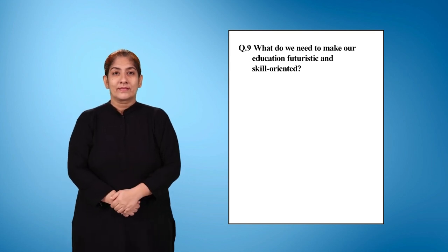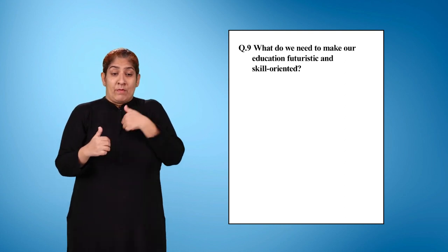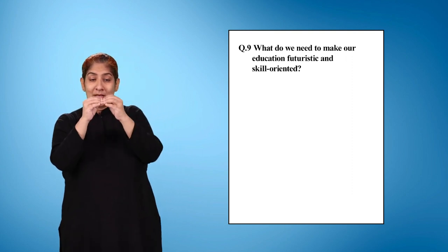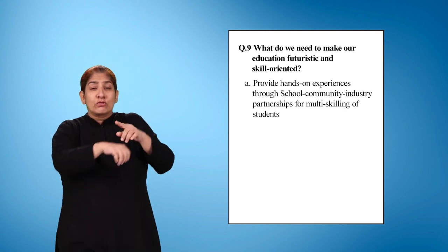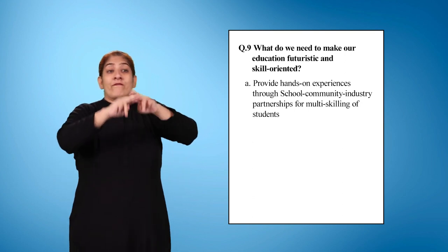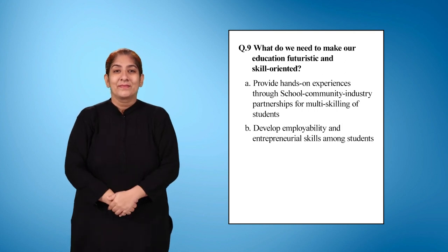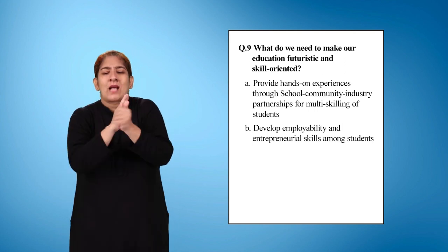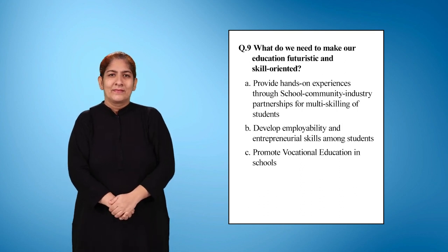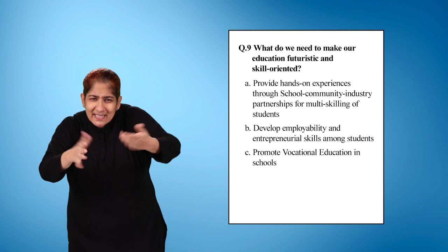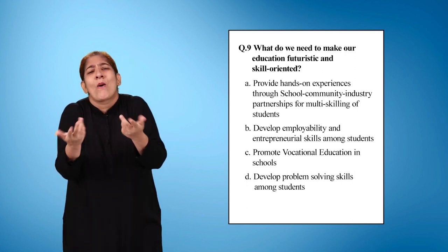Question 9: What do we need to make our education futuristic and skill oriented? Select one or more options. Option A: Provide hands-on experiences through school, community, industry partnership for multi-skilling of students. Option B: Develop employability and entrepreneurial skill among students. Option C: Promote vocational education in schools. Option D: Develop problem solving skills among students.